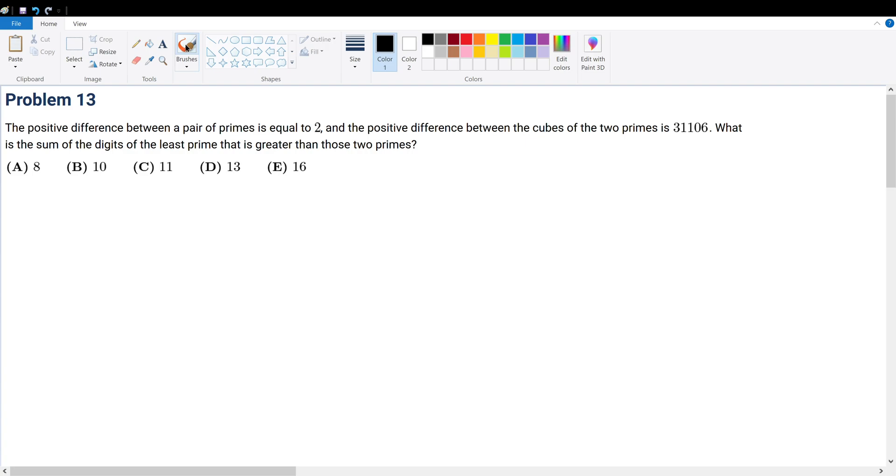Problem 13: The positive difference between a pair of primes is equal to 2, and the positive difference between the cubes of the two primes is 31106. What is the sum of the digits of the least prime that is greater than those two primes?